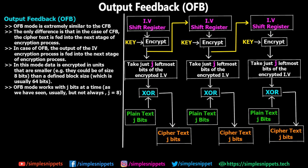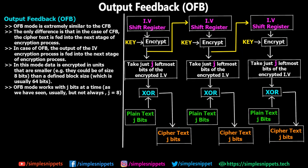OFB — output feedback mode — is extremely similar to CFB, cipher feedback. The only difference is that in CFB the cipher text is fed into the next stage of the encryption process. You can see this blue dotted line: in cipher feedback mode, j bits of the cipher text from the first iteration are fed back into the shift register as the IV for the next iteration. In output feedback, that is not happening — instead the yellow feedback line shows where the feedback actually occurs.